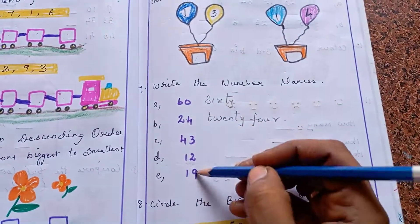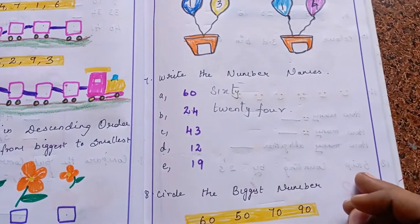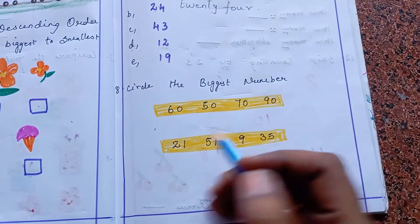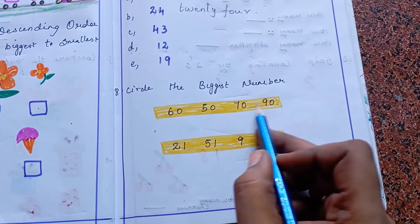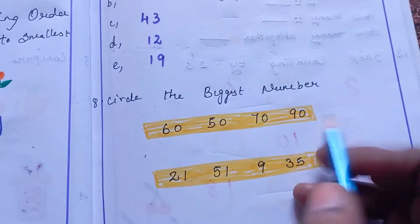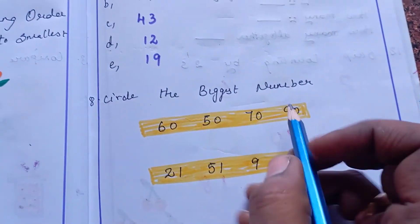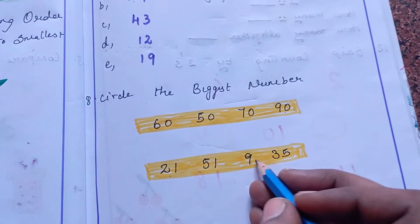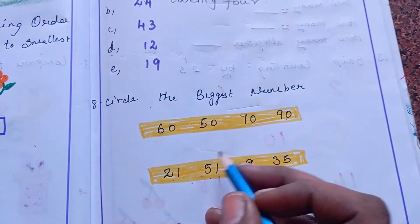The next question is: circle the biggest number. Here, comparatively, the kids circle the biggest number. Here is 60, 50, 70, 90 — 90 is the biggest number, so circle 90. Next: 21, 51, 9, 35 — 51 is the biggest number, so circle 51.